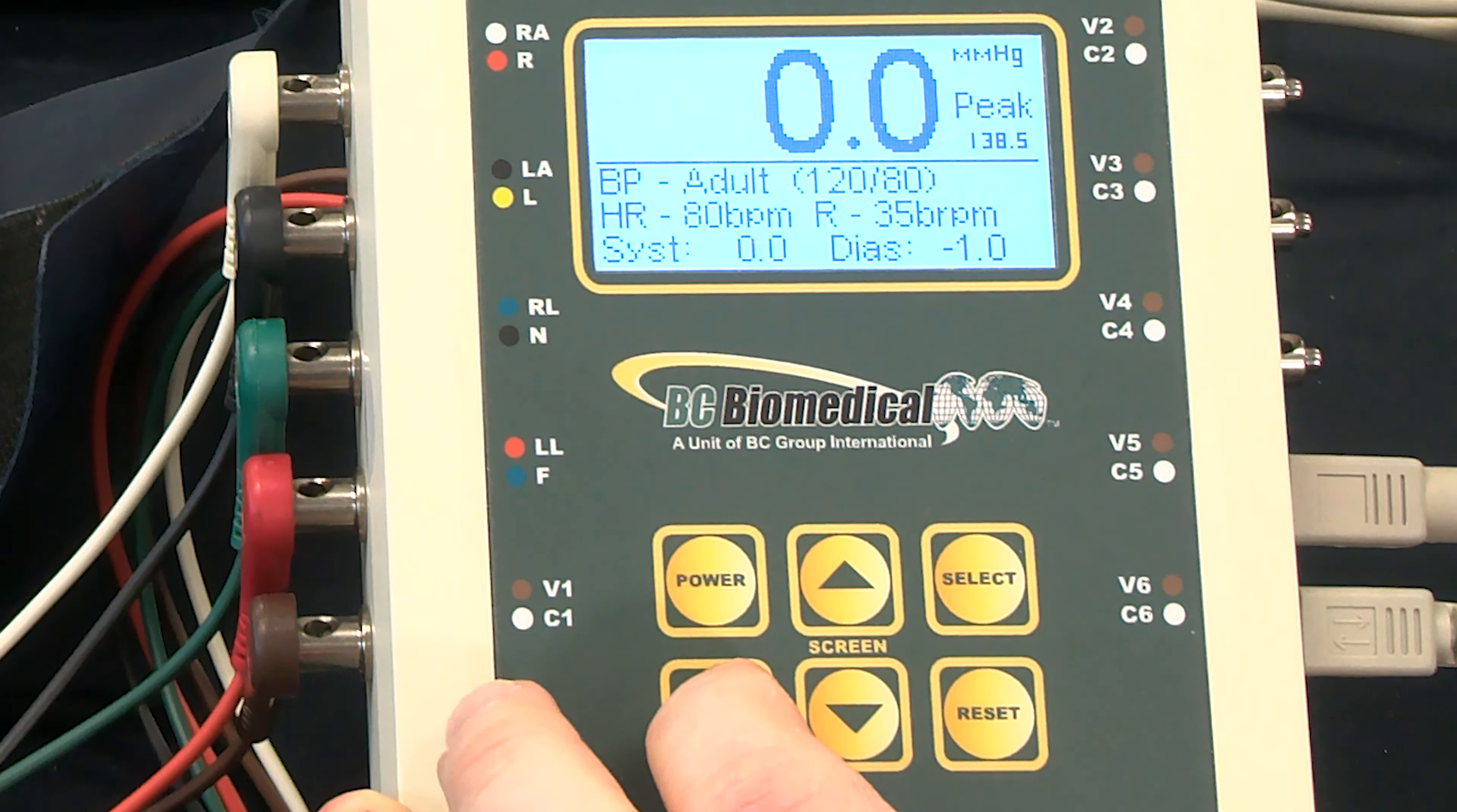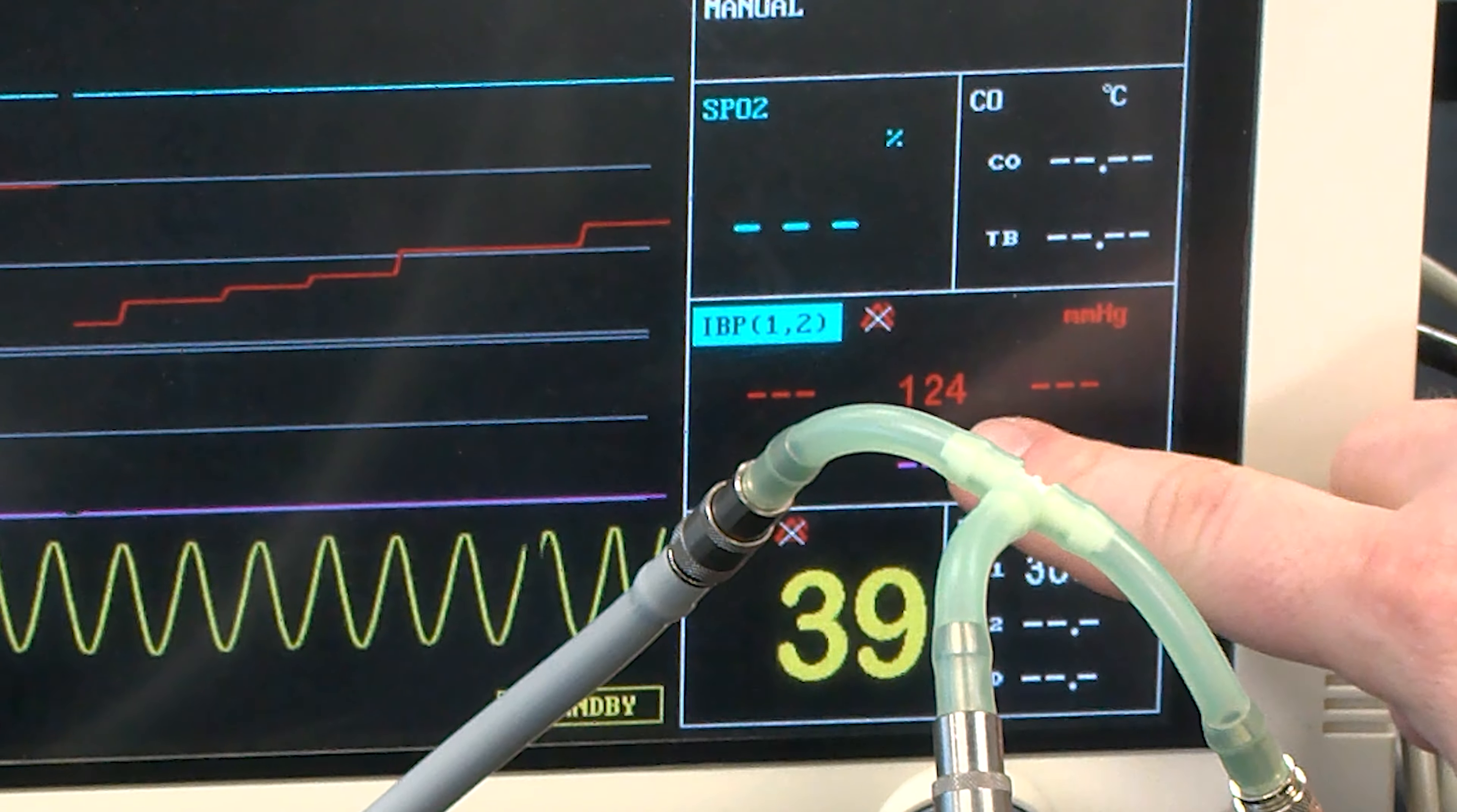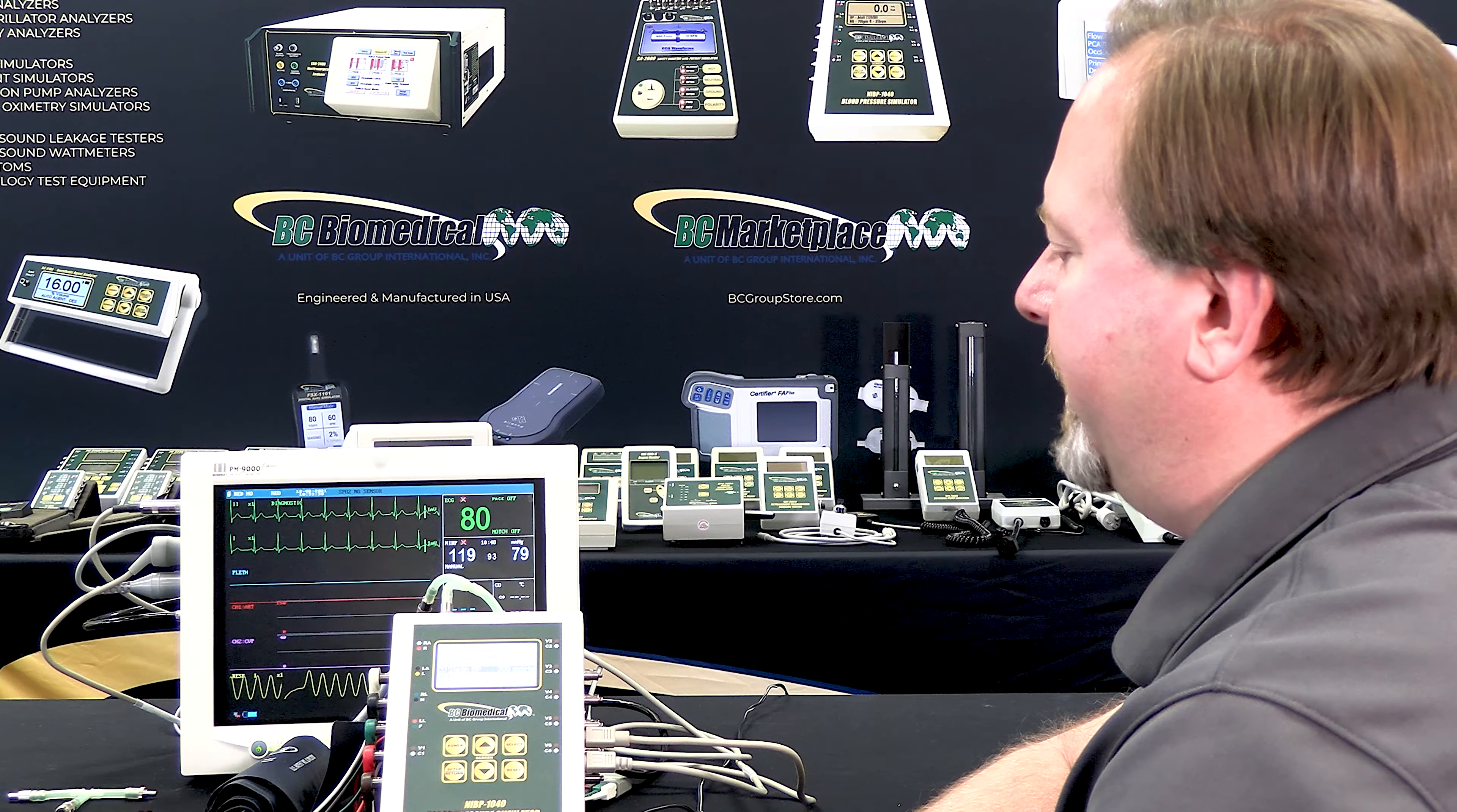To get to the static blood pressures, I would go to the setup menu, and I can scroll through the static blood pressure settings, and at that point I would watch for the center measurement to show me the static pressure that is being measured by the monitor, and so we can check that across the range to make sure that it is measuring accurately.